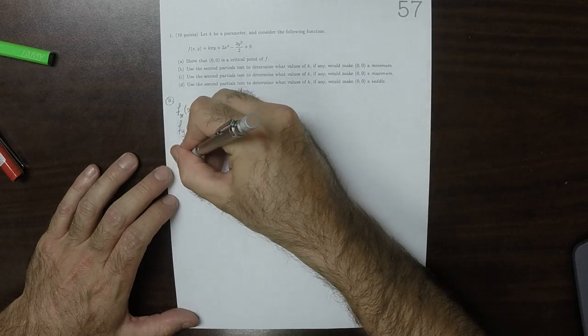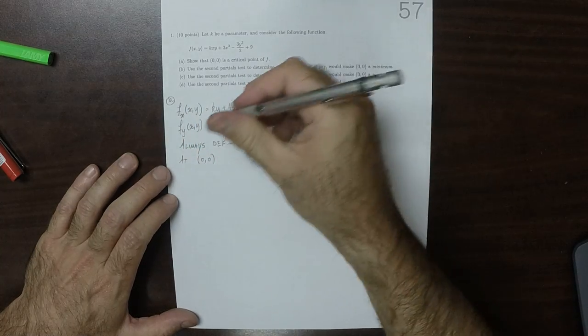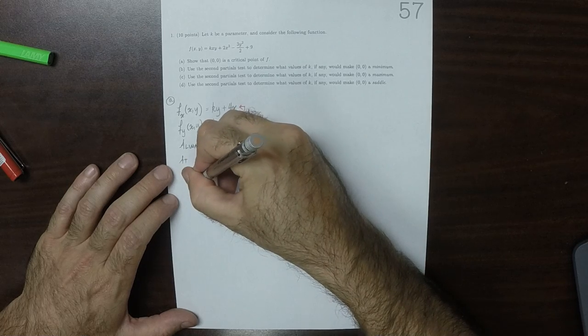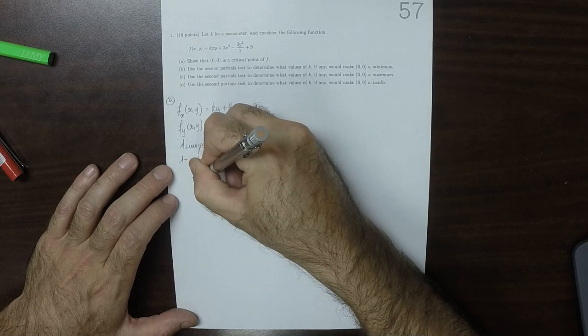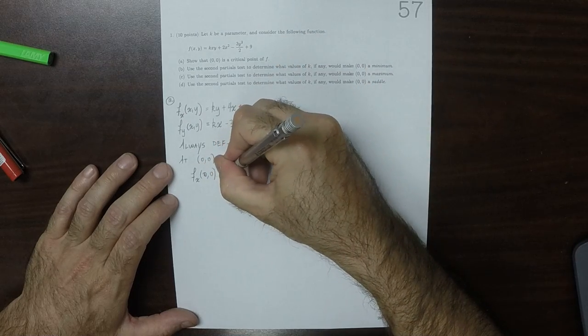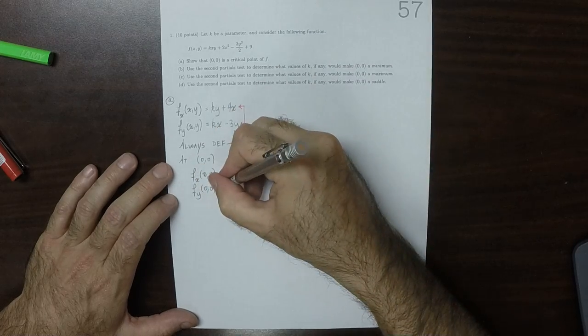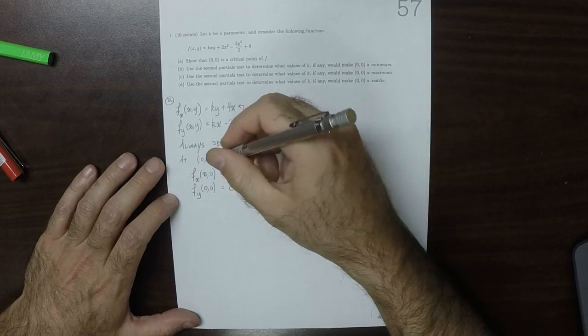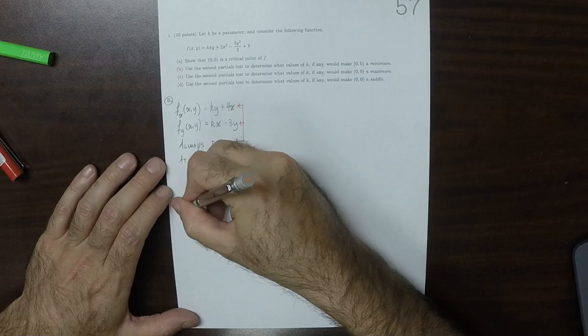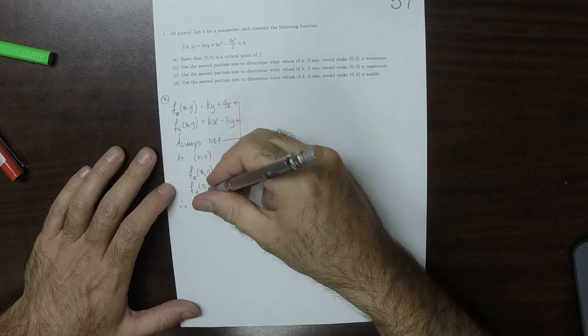So notice that at 0, 0, the x partial, when you plug in 0, 0, you get 0. And the y partial, when you plug in 0, 0, you get 0. So therefore, 0, 0 is a critical point.